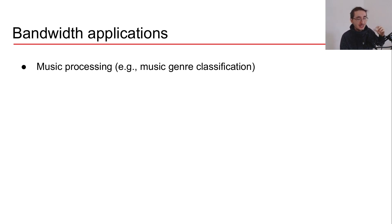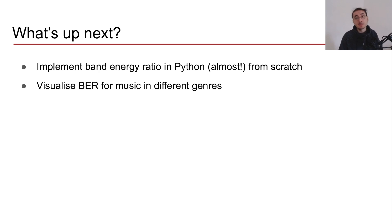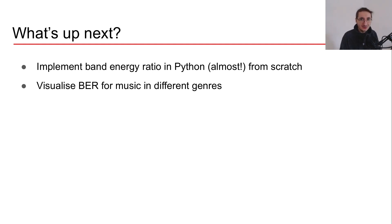By now you should have a good understanding of these basic frequency domain audio features. There are many more, but with this foundation you can easily understand the others. Next time we'll implement the band energy ratio from scratch in Python and visualize it for pieces of music in different genres to see if we can tell them apart based only on the band energy ratio. If you enjoyed the video, please leave a like, subscribe, and leave any questions in the comments below.